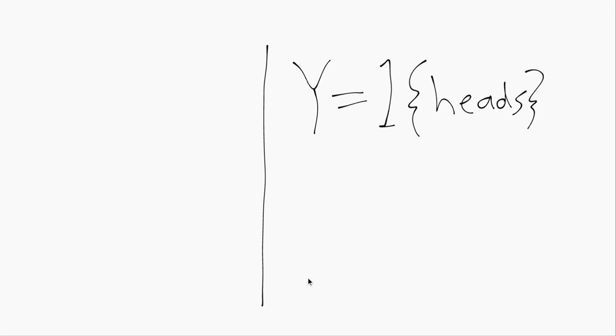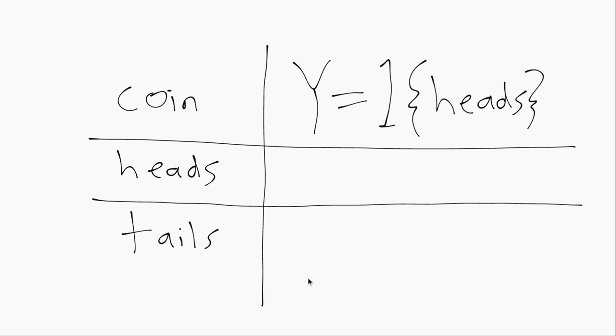To show this more explicitly, we have our coin flip here. There's only two possibilities, heads or tails, and this formula is saying...